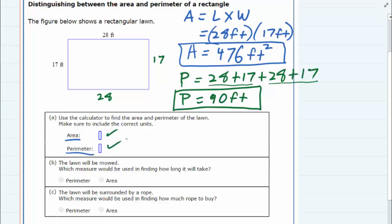Now for the last two questions, part B asks: the lawn will be mowed, which measure would be used in finding how long it would take? If we were mowing the lawn, we would be going back and forth mowing the lawn, which would be the inside of this shape, and we would have to cover the whole thing. So that would be our area.